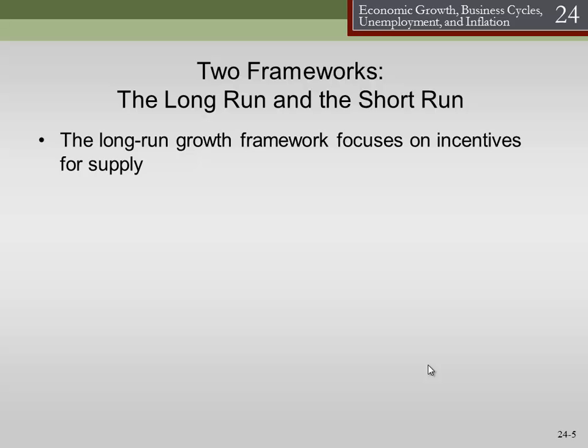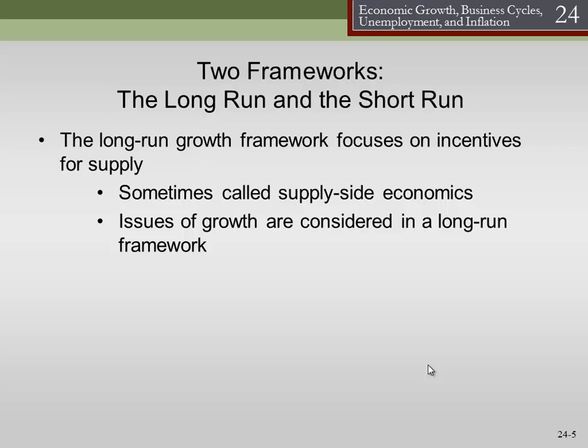Long run growth framework focuses on incentives for supply. So we have two frameworks: the long run and the short run. Generally in the long run, we assume the market is fairly flexible. So if there's excess supply of something, people will stop producing it — because in the long run we have a long enough time span to figure out what everybody wants and only produce that. So in the long run, we focus on supply.